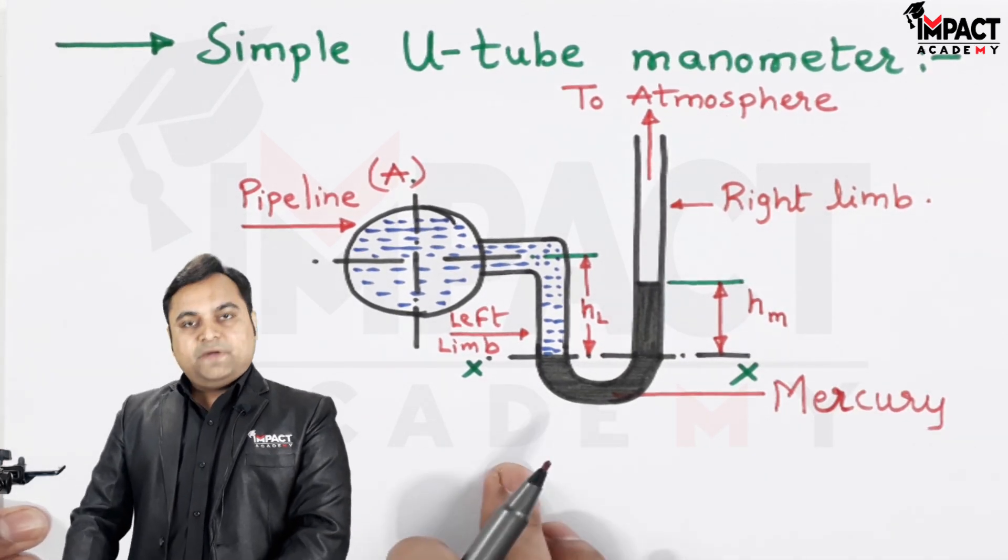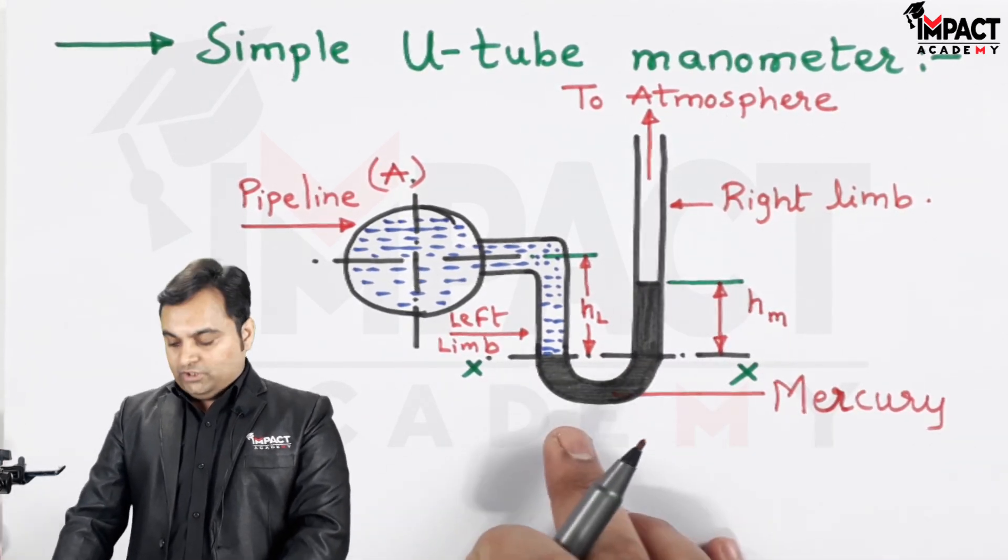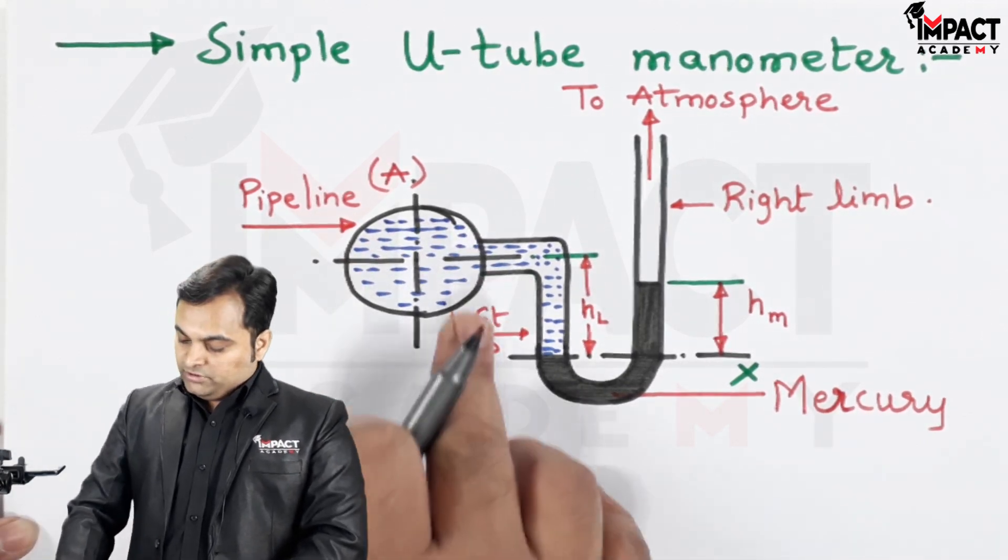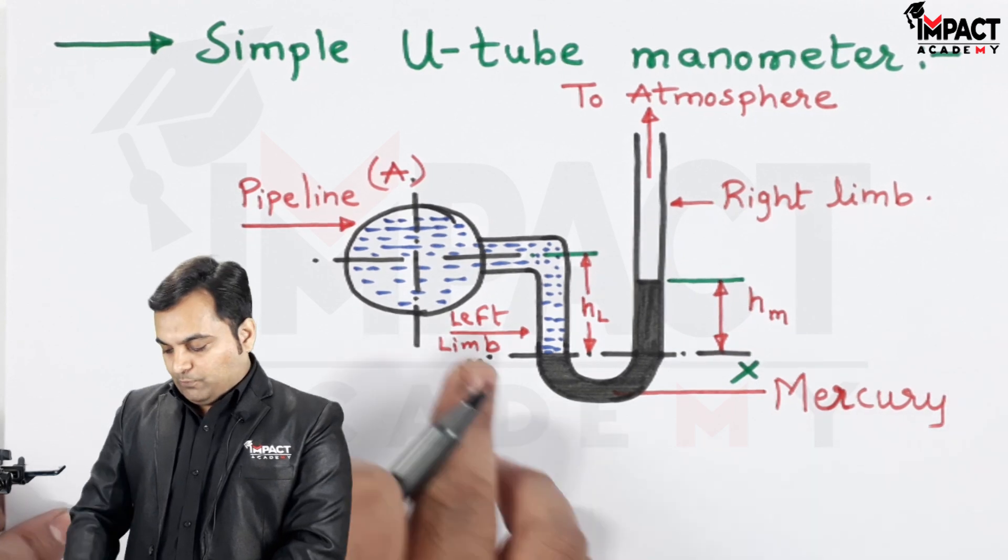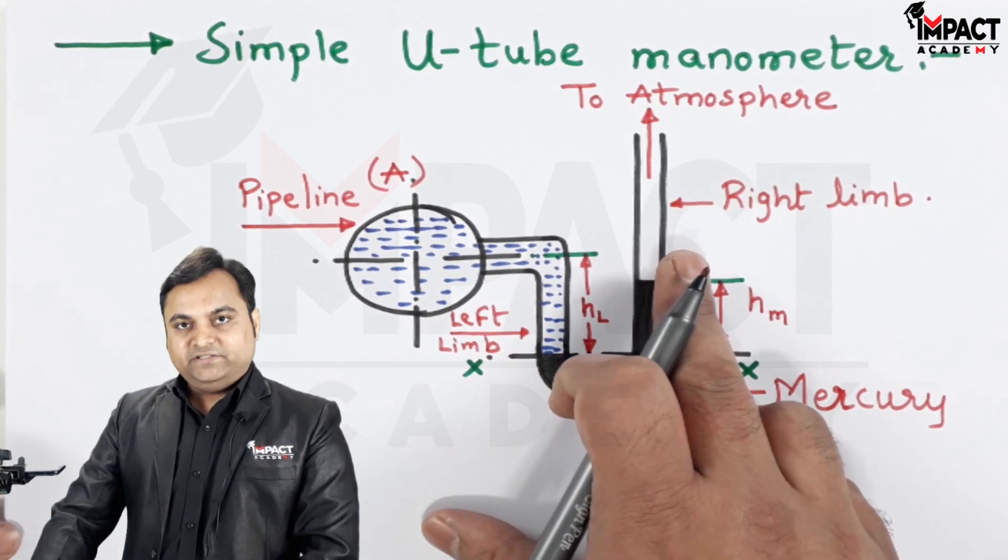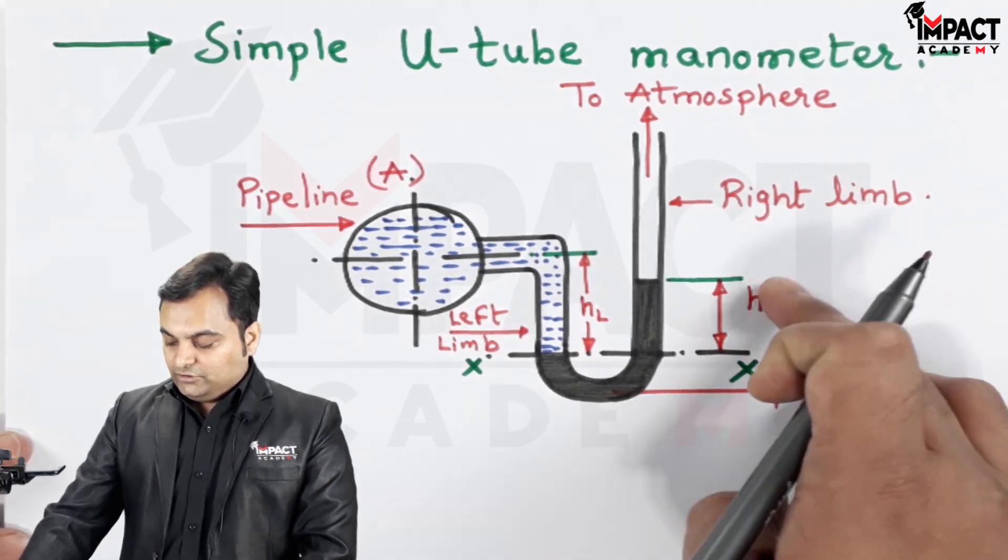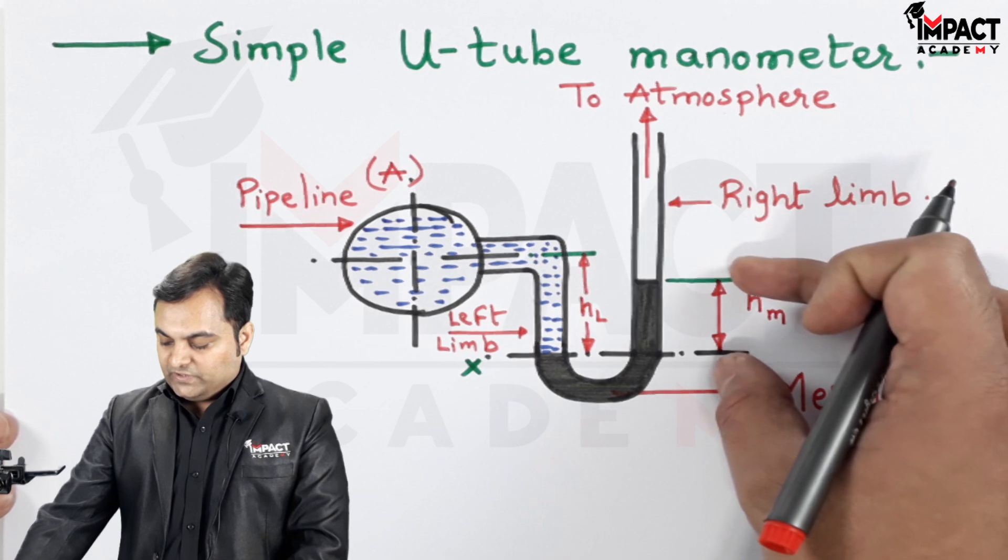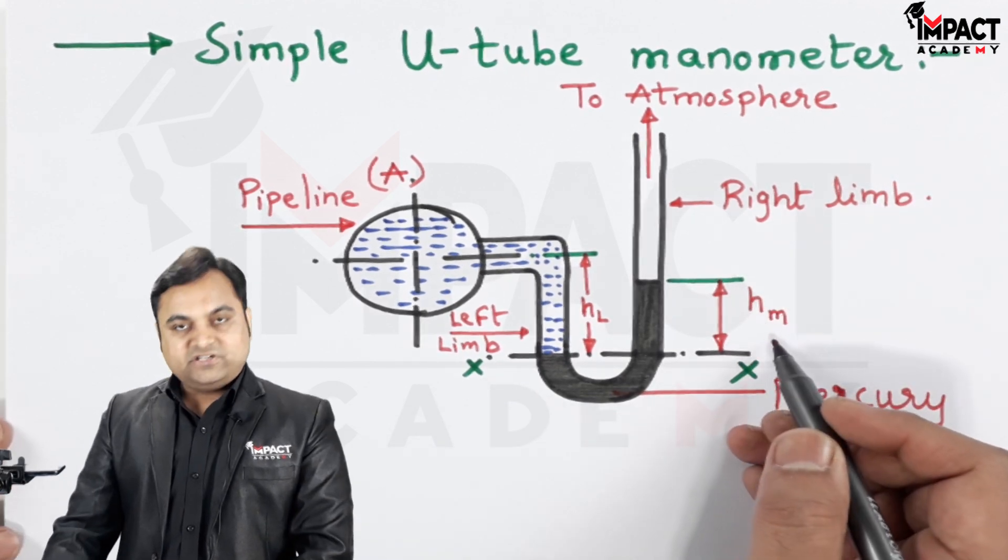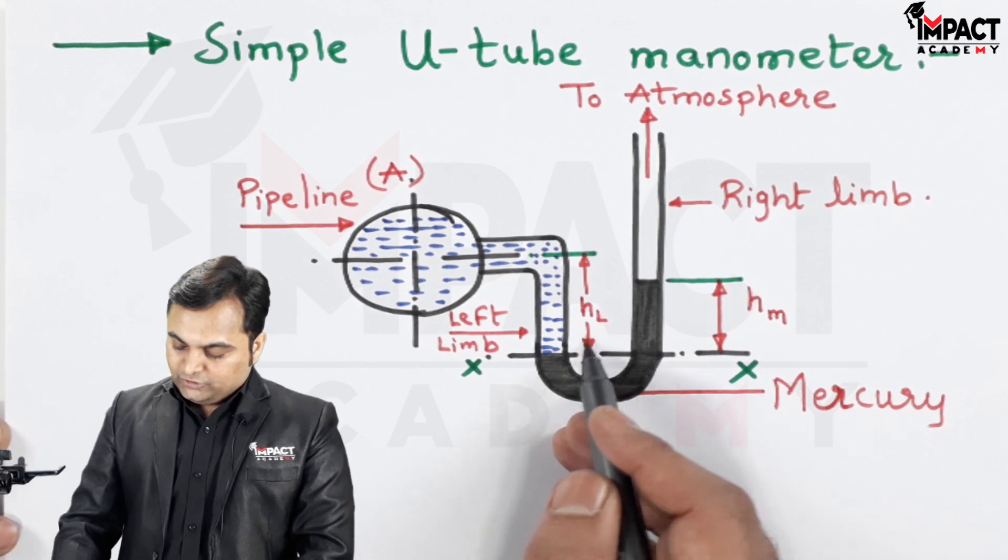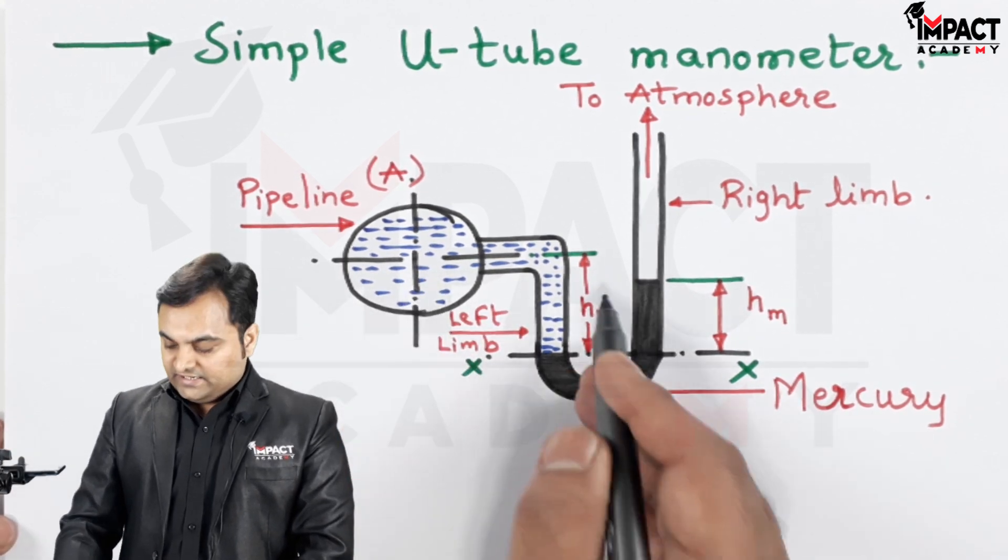This manometer contains mercury. When the pressurized liquid passes through this U-tube manometer, it pushes the mercury inside the right limb. When it pushes the mercury into the right limb, we get the height of mercury column, denoted by H subscript M, whereas H_L indicates the height of the liquid inside the left limb.